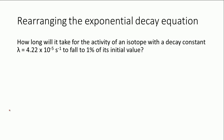Here's another example, this one requires us to rearrange in a similar way. The question is: how long will it take for the activity of an isotope with decay constant lambda equals 4.22 times 10 to the minus 5 per second to fall to 1% of its initial value? They're not giving us any actual figures for the activity, but we know it falls to 1% of its initial value in a certain time, and we need to calculate that time.